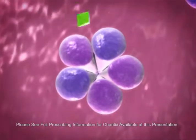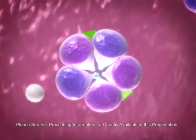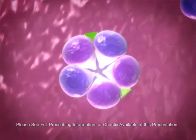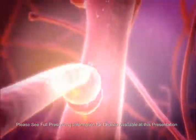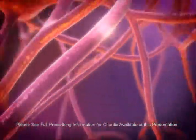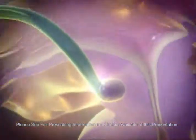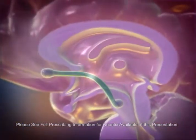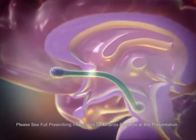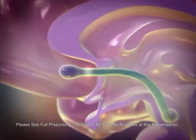As varenicline binds, there are fewer available binding sites for nicotine. This result and the agonist effect have important implications for the mesolimbic dopamine system. Due to the decrease in nicotine binding and the partial stimulation by varenicline, there is a marked reduction in action potentials from the VTA leading to the nucleus accumbens.